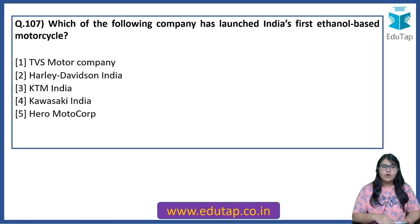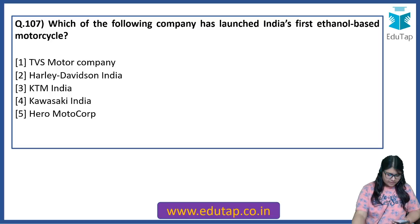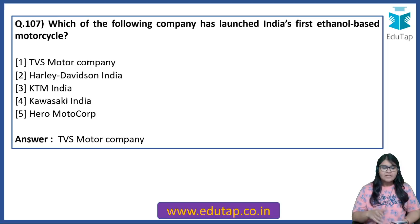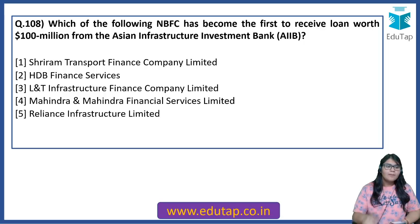Which of the following companies has launched India's first ethanol-based motorcycle? As we know, we are moving towards a greener India to avoid pollution — this is a very major step. The answer is Chennai-based TVS Motor Company. This is the particular company which has launched India's first ethanol-based motorcycle.